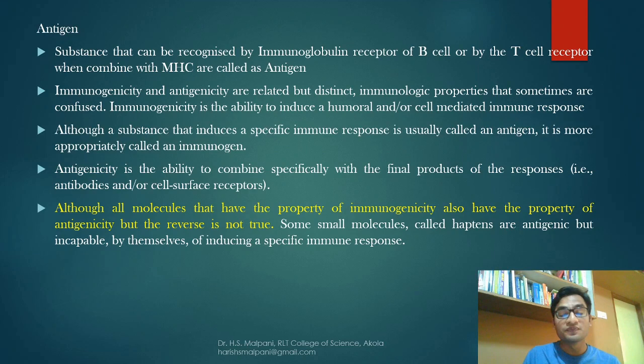We need to take the example of haptens. Haptens are small molecules that are antigenic but not immunogenic — they are incapable of inducing a specific immune response. After knowing these basic things about antigen, we need to understand what epitopes are.